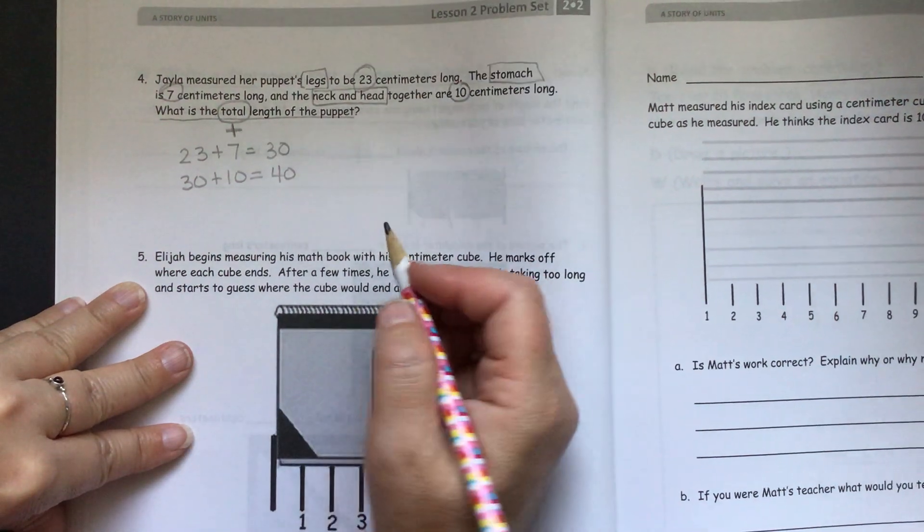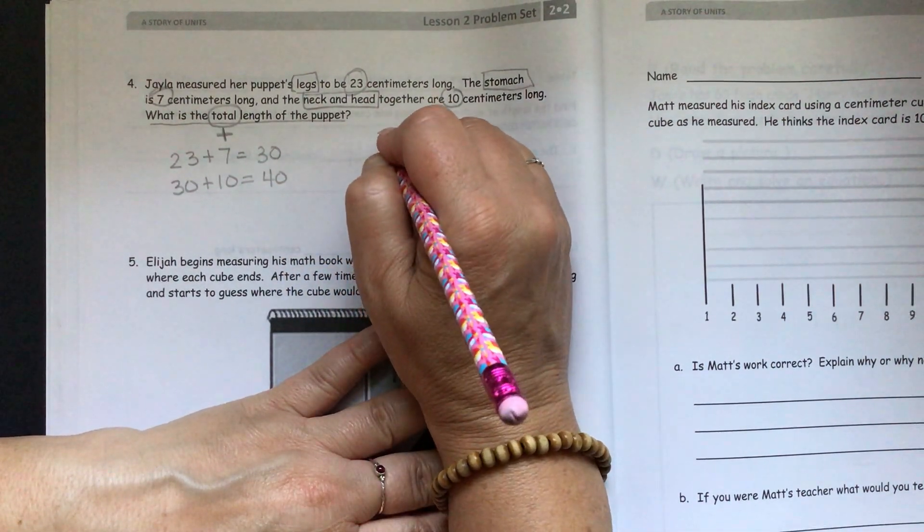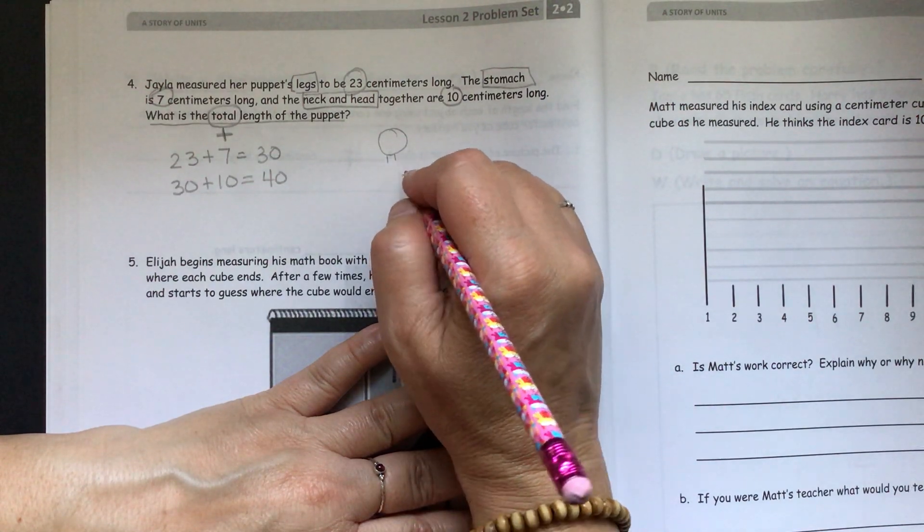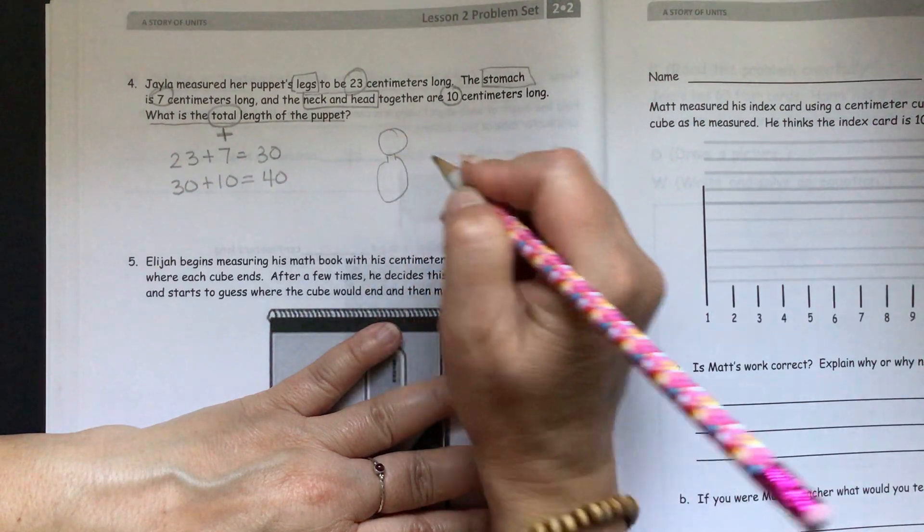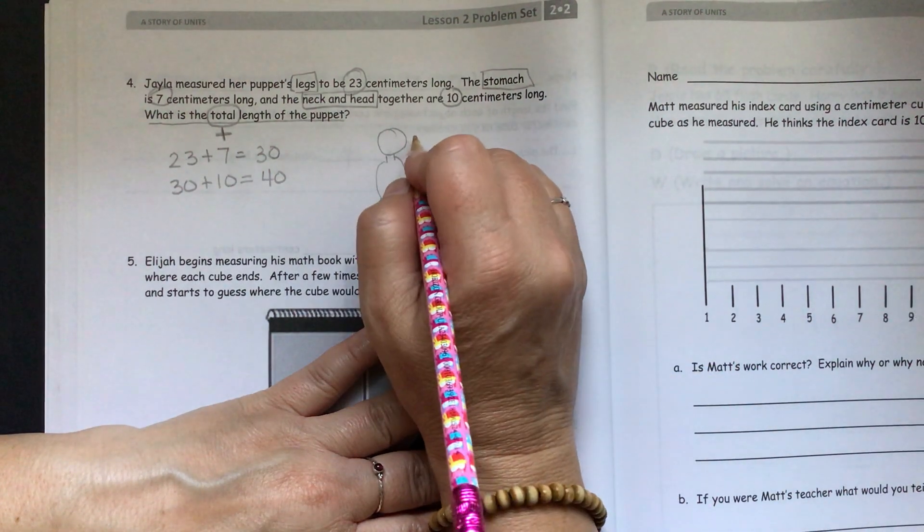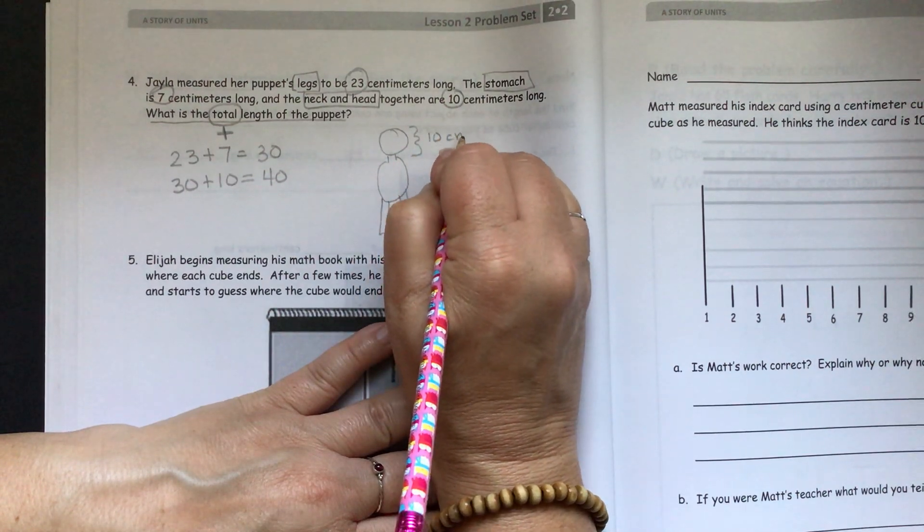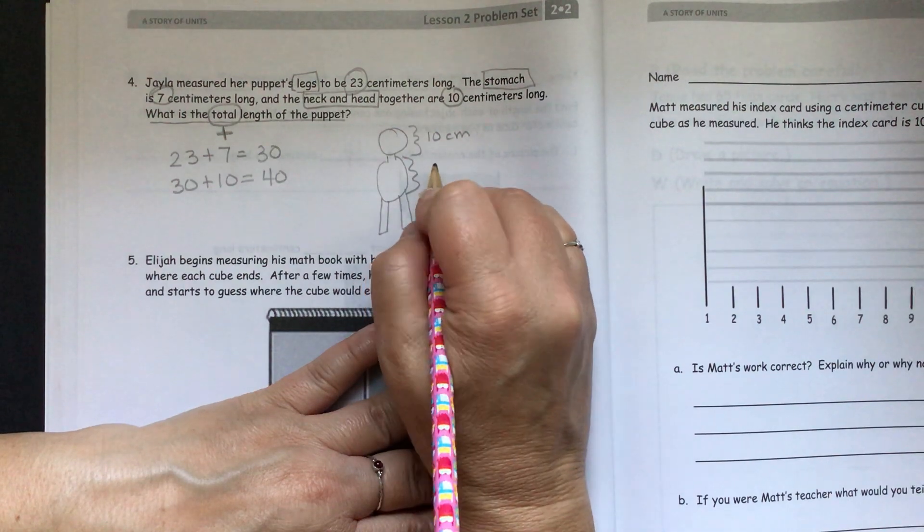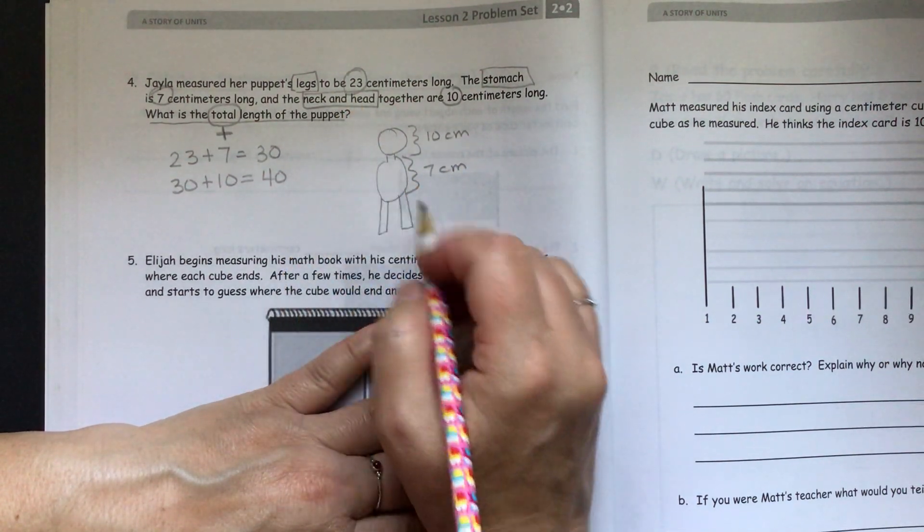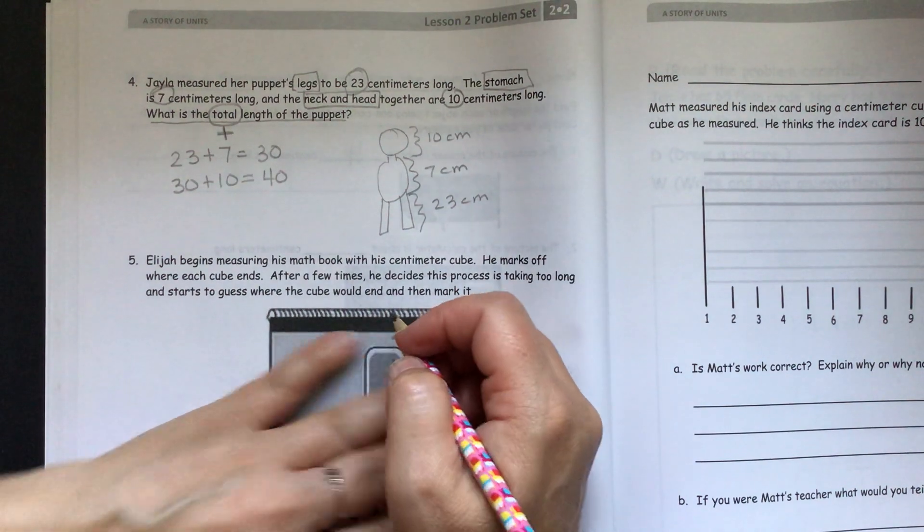And remember when we do our word problems, we're supposed to draw a picture. So I kind of like to start at the top. So I'm going to put the head and neck. And then it talks about the stomach. I'm going to assume that's the body. And legs. So this head and neck together are 10 centimeters long. And we'll say this area is the stomach, which they say is seven centimeters long. And the legs are 23 centimeters long. So there's our picture.